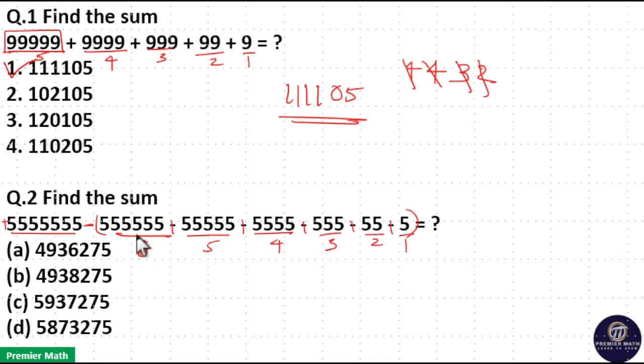So 6 into 5 is 30. Remaining 3. 5 into 5, 25 plus 3, 28. Remaining 2. 5 into 4, 20 plus 2, 22. Remaining 2.